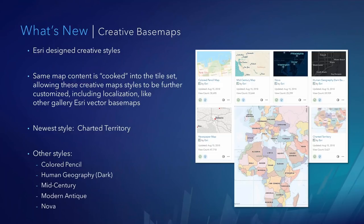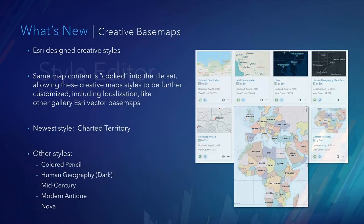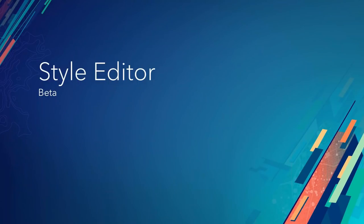In terms of map styling, Esri has a set of creative basemaps. These also point to the single tile set and have the same map contents as topo map, street map, or canvas map — but they've taken the cartography to the next level, really showing how you can push the envelope of mapping design. Our newest style released around UC is Charted Territory, which is like a scholastic map with different colors for each admin polygon. We also have Colored Pencil, Mid-Century, NOVA, Human Geography, and Newspaper. Wes Jones will take over to talk more about the style editor.